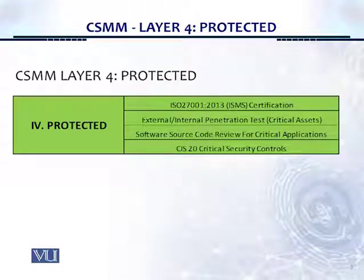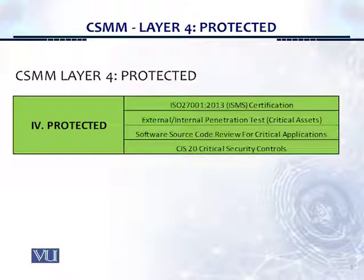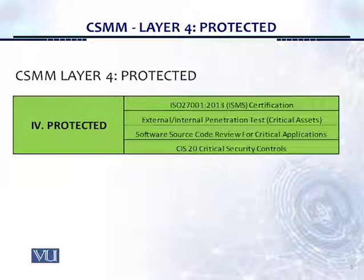The Cybersecurity Maturity Matrix Layer 4 consists of four controls: 4.1 is CIS 20 Critical Security Controls; 4.2 is Software Source Code Review for Critical Applications; 4.3 is External and Internal Penetration Test for Critical Assets; and 4.4, the ISO 27001 ISMS Certification, is also part of CSMM Layer 4, the Protected Layer.